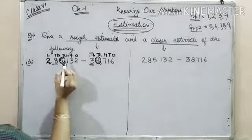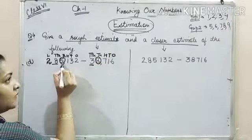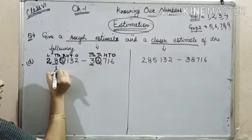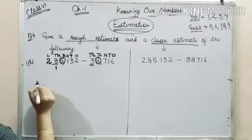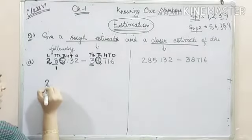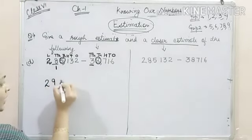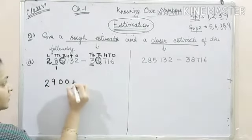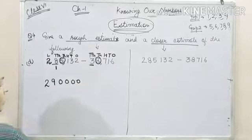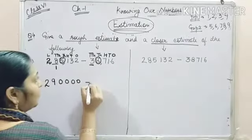In number 1, the thousand place is 5 and it belongs to group 2. That means 1 will be added to 10,000 place and our number becomes 8 plus 1, 9 and the rest of the digits will become 0.